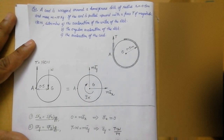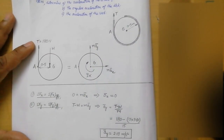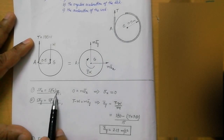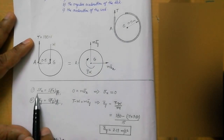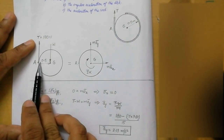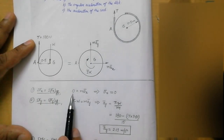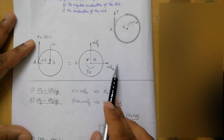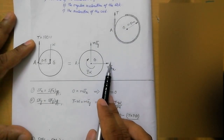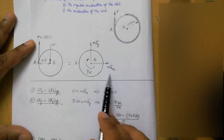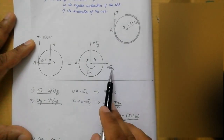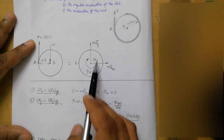All three equations are applicable here. Let us start with the first equation: summation Fx equals summation Fx effective. Looking at the force system, there is no force acting in the x direction, so we write 0 equals m·ax. From this equation we conclude that ax equals 0 — there is no acceleration of the disc along the x direction.